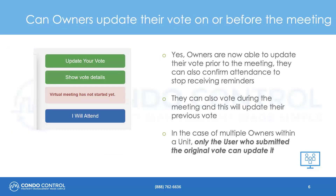Can owners update their vote on or before the meeting? Yes, owners have the ability to change their vote at any point leading up to the meeting, as well as during the live meeting, which will update their previously entered vote. In the case of multiple owners within a unit, only the user who submitted the original vote can update it.